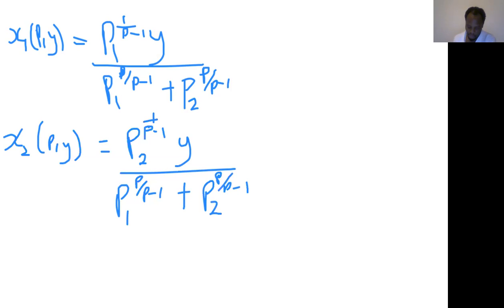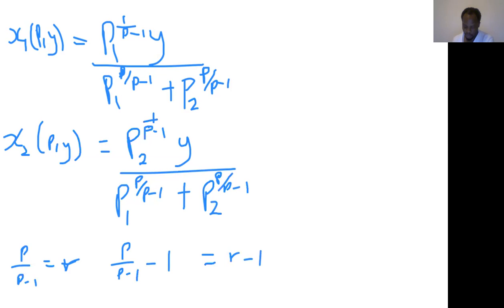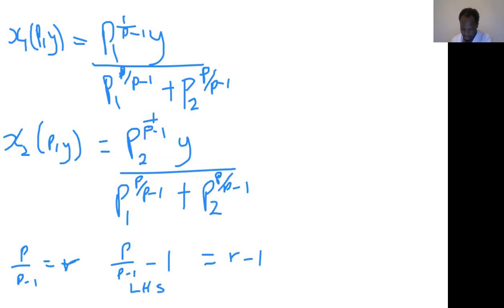Let's simplify this. We are going to use R to represent φ/(φ-1). Then if we subtract 1 from both sides of the equation, we get P_i^(1/(φ-1)) equals R minus 1. So when I simplify the left-hand side expression, I get 1 over (φ-1) equals 1 over P_1^(R-1).